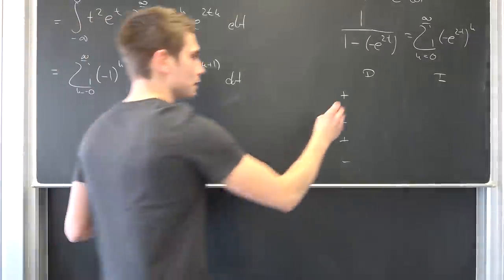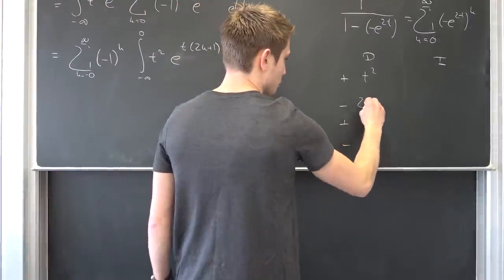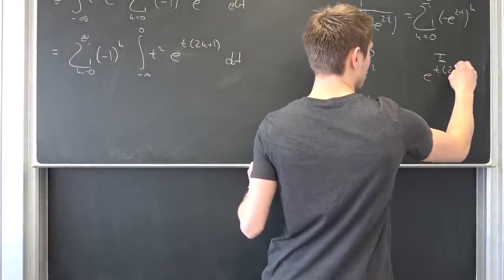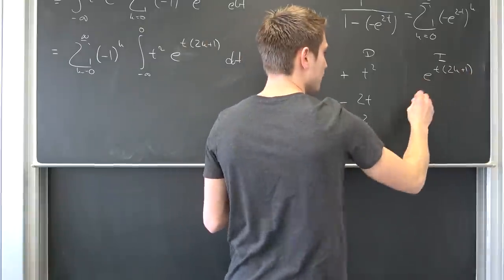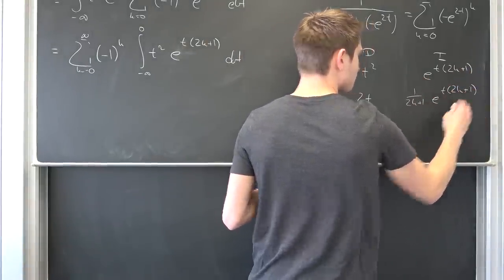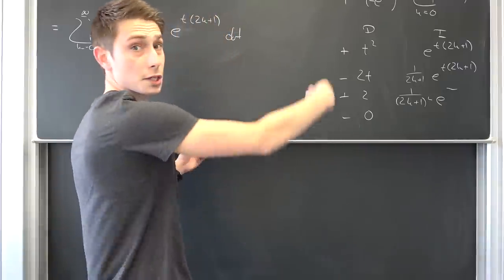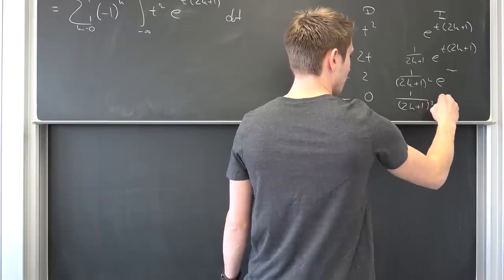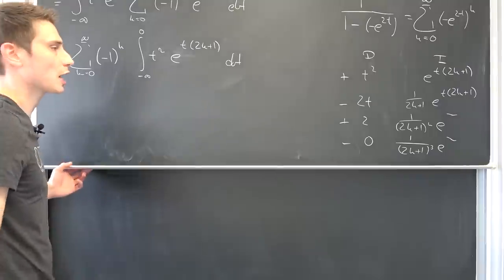Differentiating t squared is the good choice right here because it goes to 0 way faster than this chunk. This is going to go to 2t, 2, and 0. Also integrating this exponential function is also quite easy. You just have to divide the integration by this argument right here. So meaning 1 over 2 times k plus 1, e to the t, 2 times k plus 1, and then for the next part 1 over 2k plus 1 squared, and then 1 over 2 times k plus 1 to the third power, e to the something.